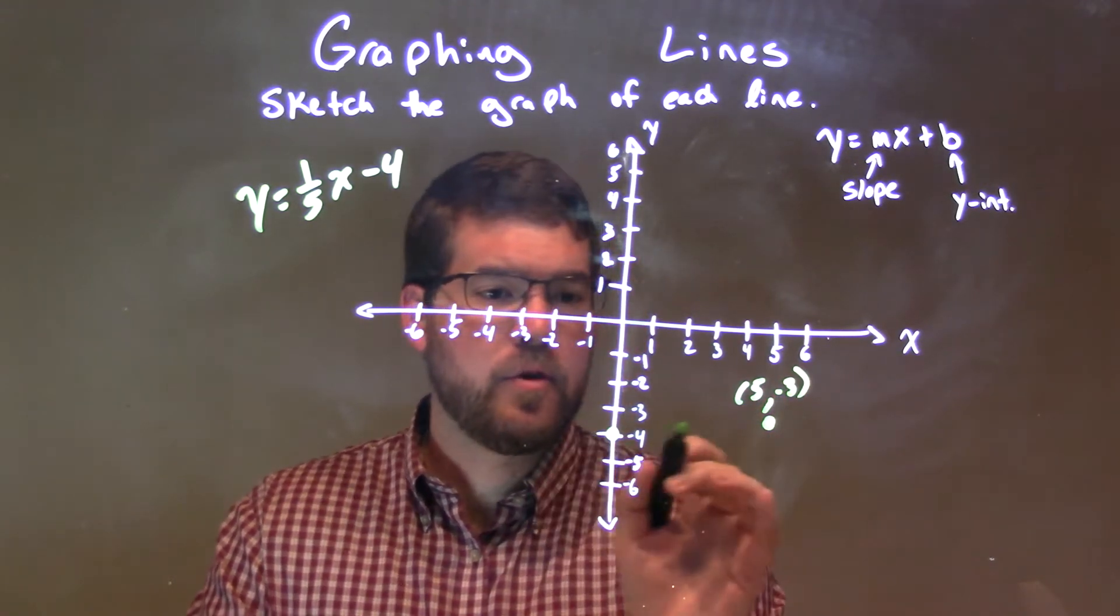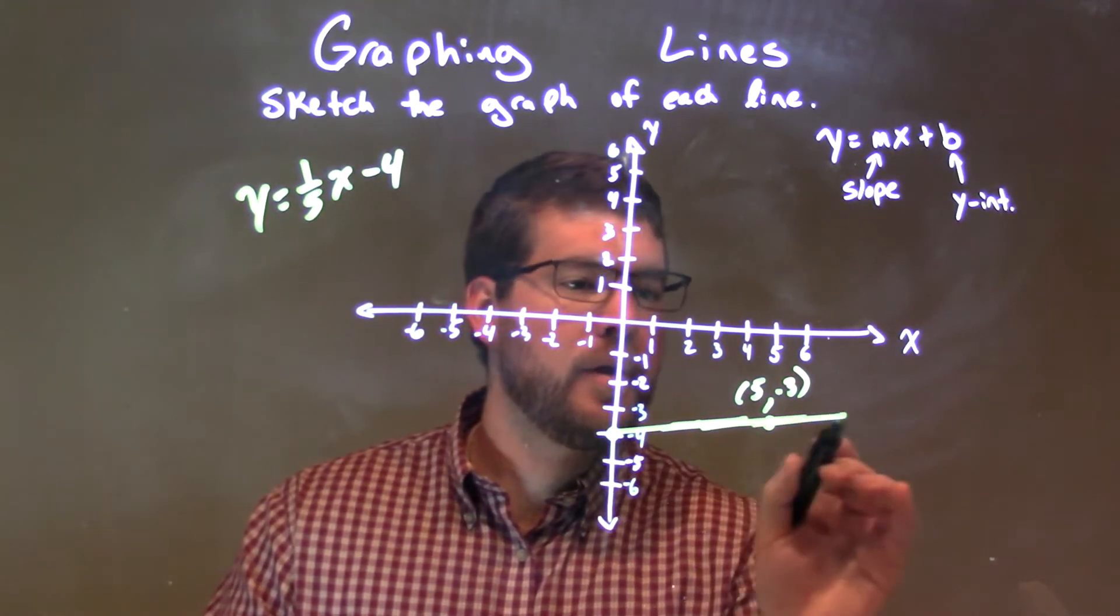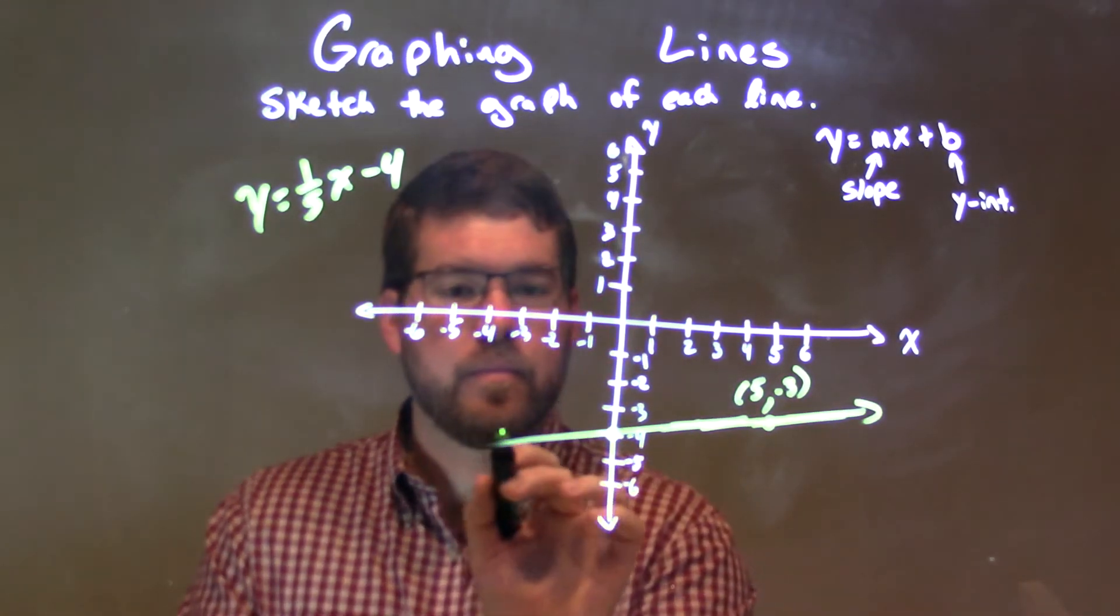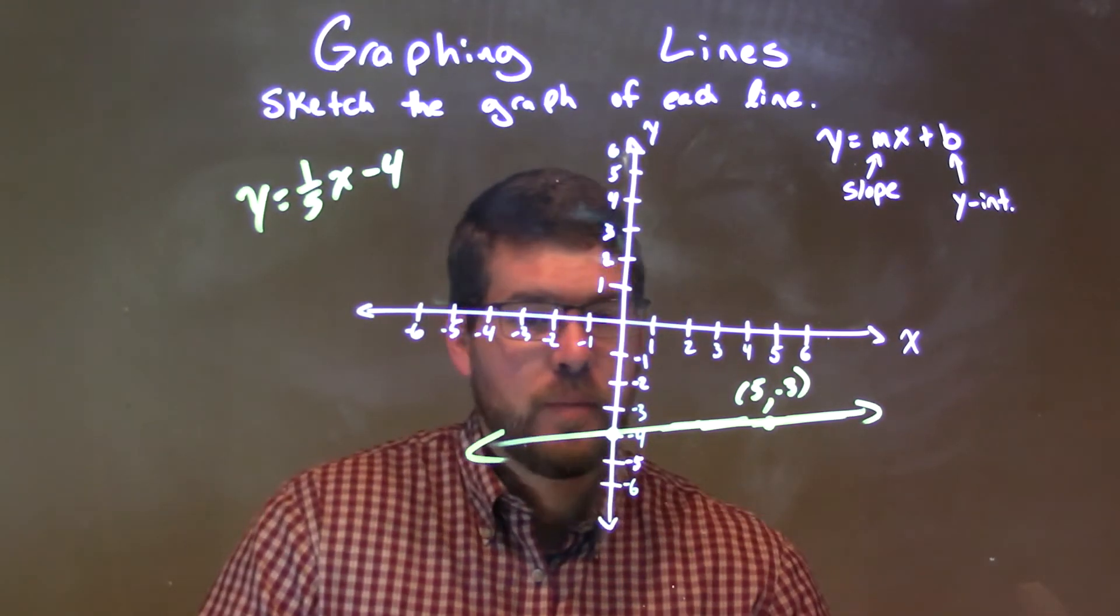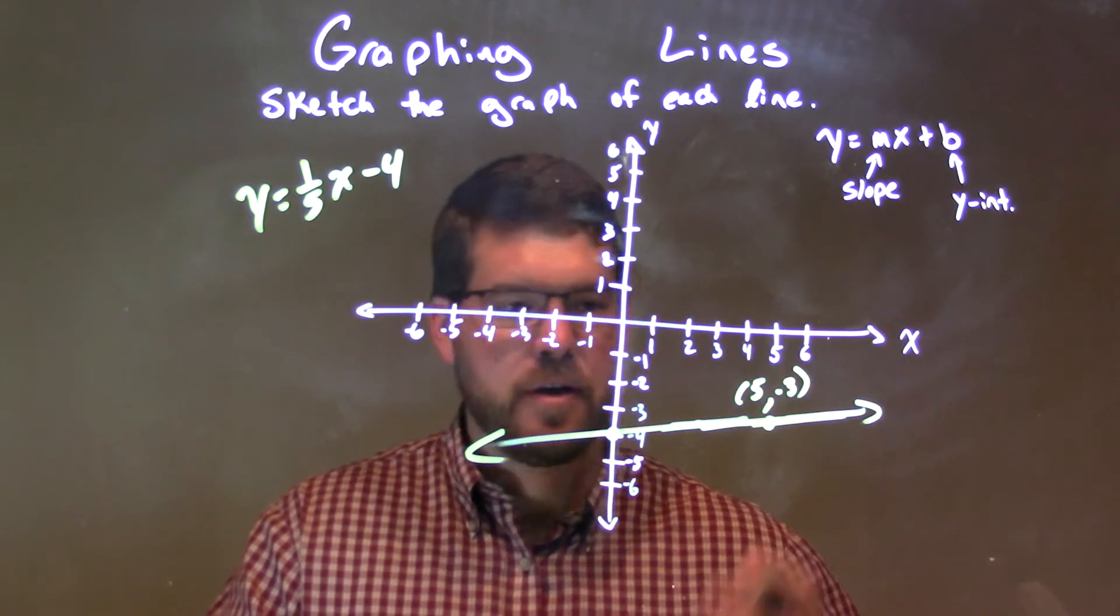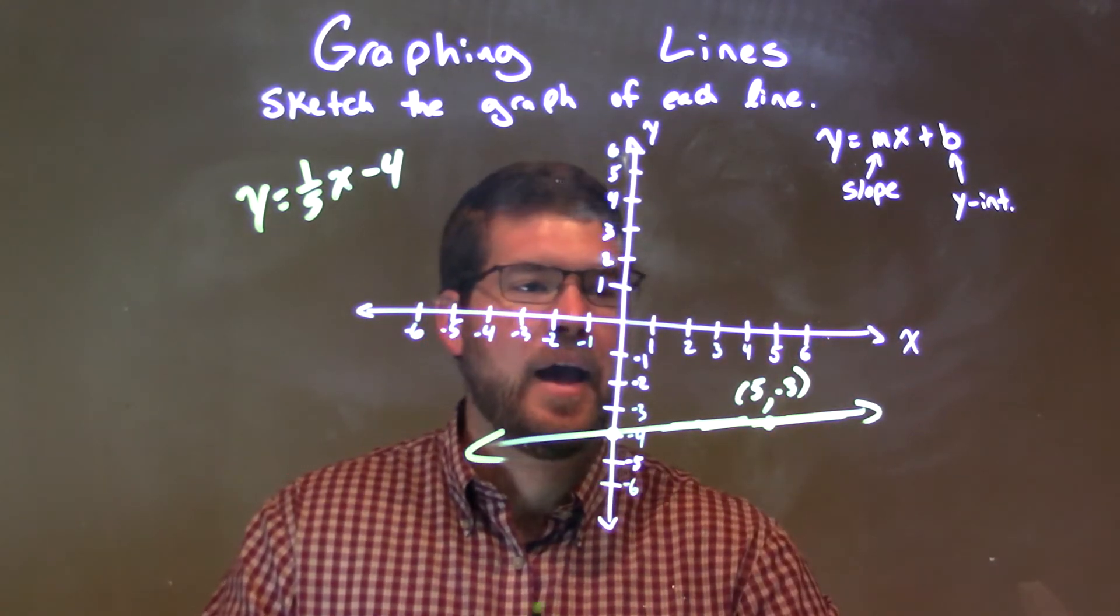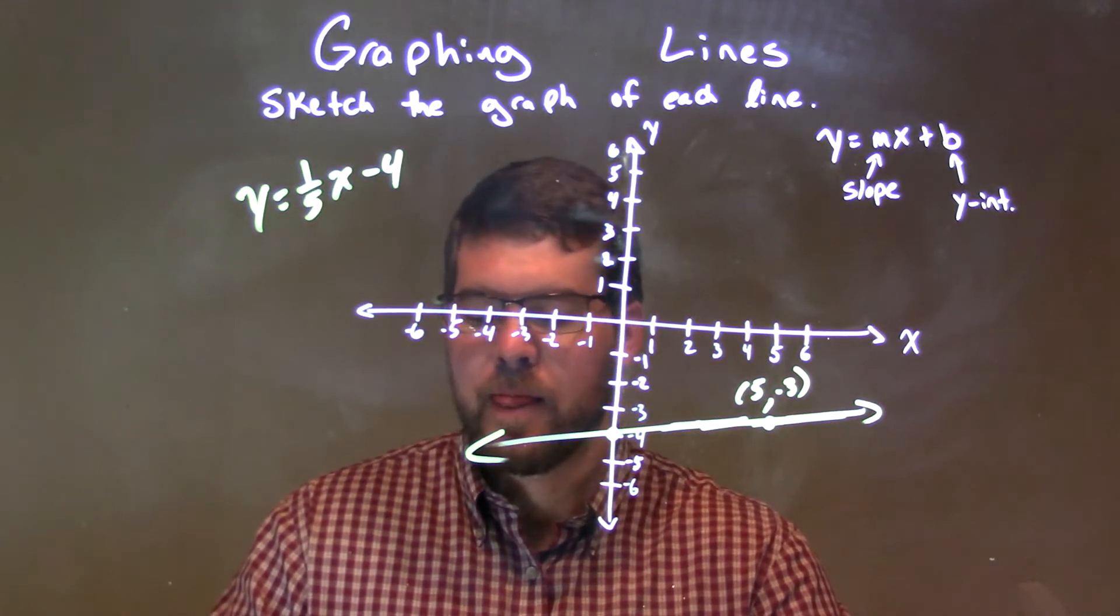So, we have two points. Let's go make a line between them. Make a little line right here. And now, we have our graph. Two points make a line. Now, sometimes, we want to have three points, but it's certainly up to your teacher. I'm okay with two points right there. We have two points labeled. We have an equation of our line graph.